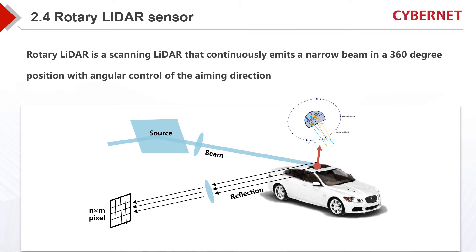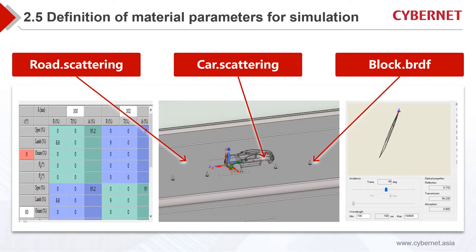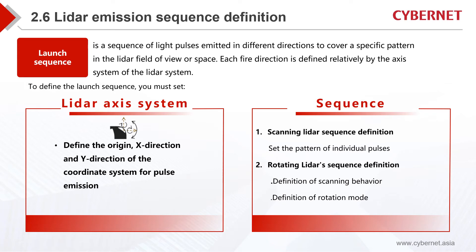Usually, this kind of LiDAR will be placed on top of a vehicle. During simulation, it is necessary to clearly define the material of the scene in the model. For example, road scattering is used to define the road material, car scattering defines the car material, and block BRDF is the material that defines the obstacle. The LiDAR launch sequence is a sequence of light pulses emitted in different directions to cover a specific pattern in the LiDAR field of view. Each fire direction is defined relatively by the axis system of the LiDAR system. To define the launch sequence, we must set both the LiDAR axis system and the sequence for either scanning LiDAR or rotating LiDAR.